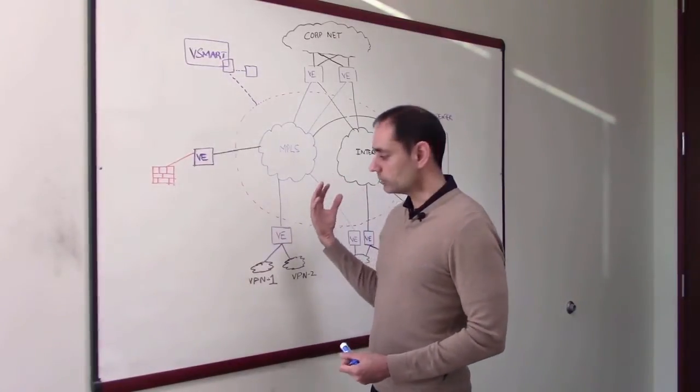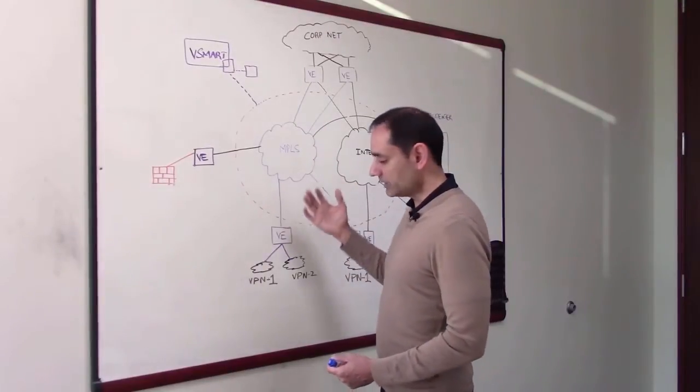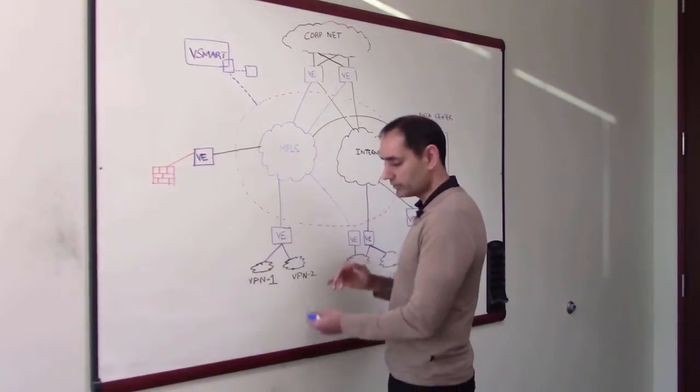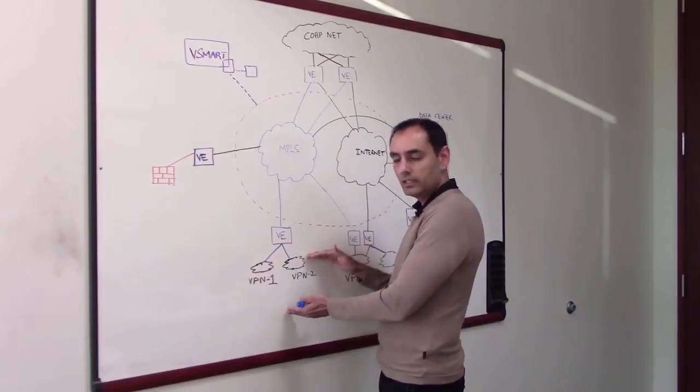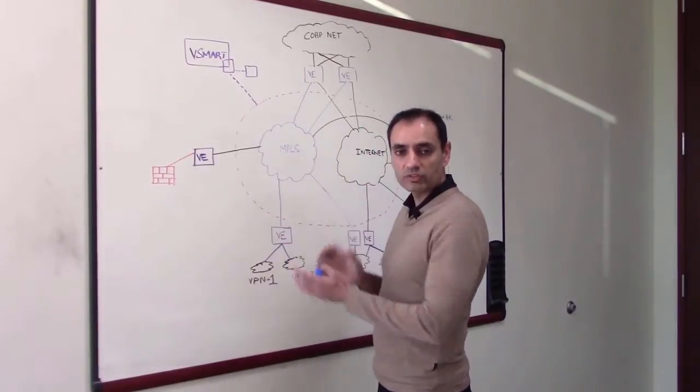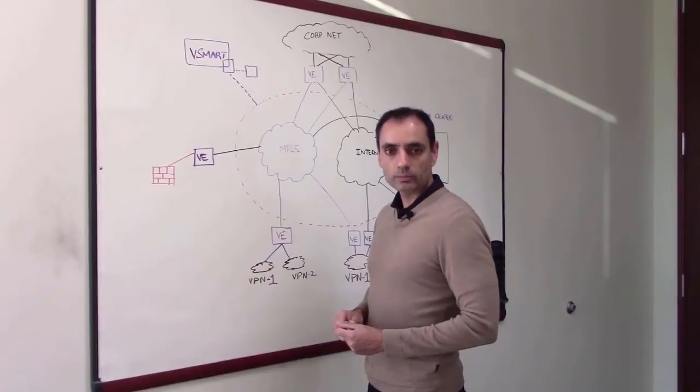In this case I'm showing two firewalls. Your policy could be as simple as: any traffic from site one going into the corporate network should traverse a firewall before it gets into the corporate network.